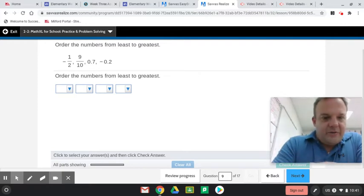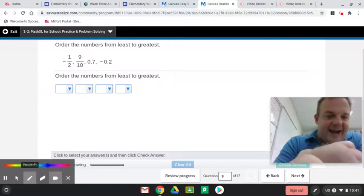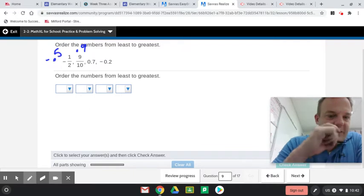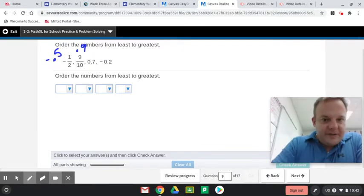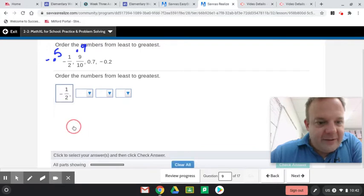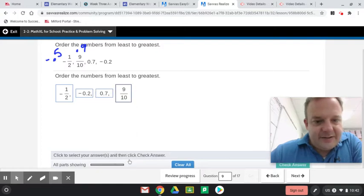So I'm going to convert these to decimals for you. Nine-tenths is 0.9. This is negative 0.5. So we're going to least to greatest. For least to greatest, negative 0.5, so negative 1 half, and then negative 0.2. And then we go into 0.7, and then 0.9 is the greatest.